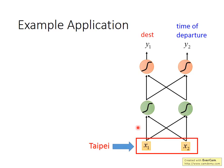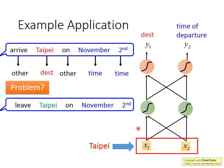Why? Suppose a user says 'arrive Taipei on November 2nd' — 'arrive' is other, 'Taipei' is destination, 'on' is other, 'November' and '2nd' are time. But if another user says 'leave Taipei on November 2nd,' then 'Taipei' should be place of departure, not destination. For the neural network, when the input is the same thing, the output should be the same thing — you can't make it sometimes output 'departure' and sometimes 'destination.' We hope our neural network has memory.